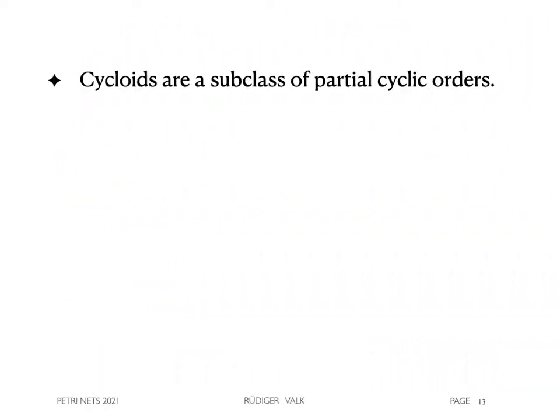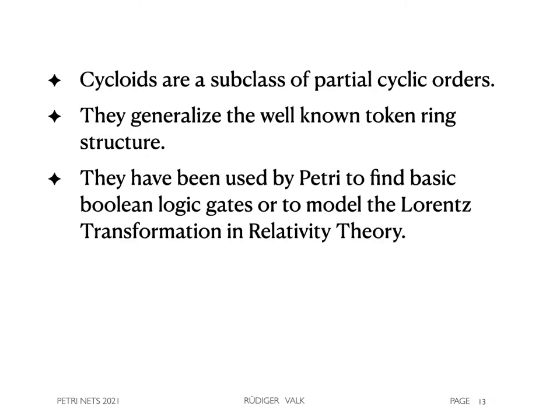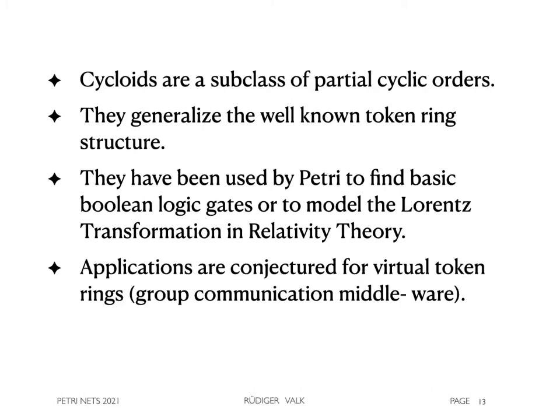Generally speaking, cycloids are a subclass of partial cyclic orders. They generalize the well-known token ring structure. They have been used by Petri to define basic boolean logic gates or to model the Lorentz transformation in relativity theory. Applications are conjectures for virtual token rings in group communications middleware.